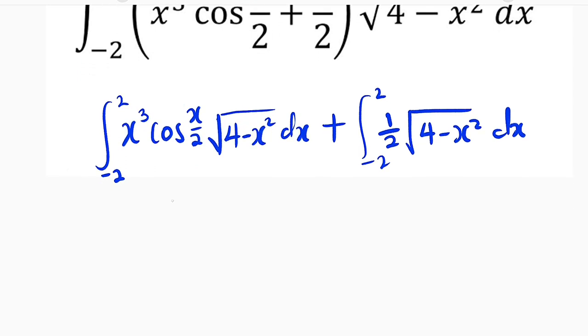Alright, from definition, if you have f of negative x equal to negative f of x, we see that the function is an odd function. So all we have to do is to substitute x equal to negative x in this expression and see whether it is going to give us negative f of x.